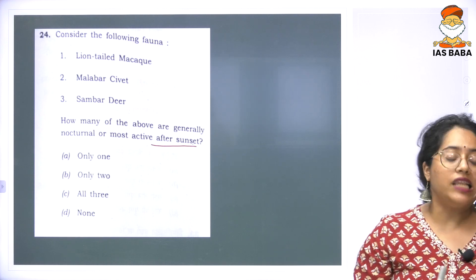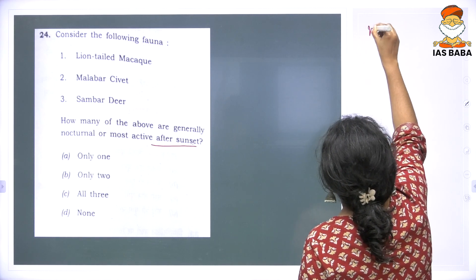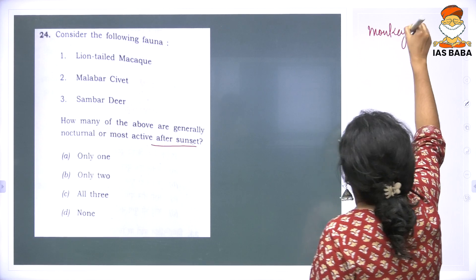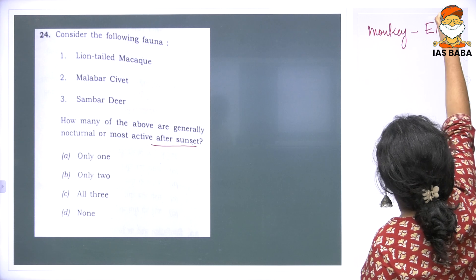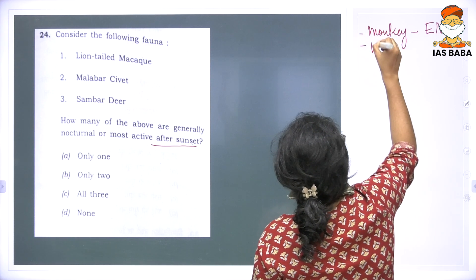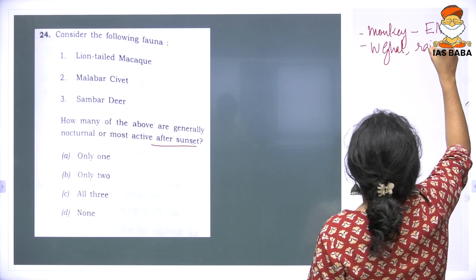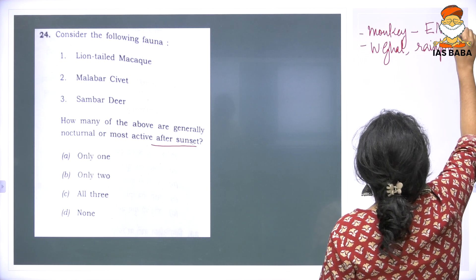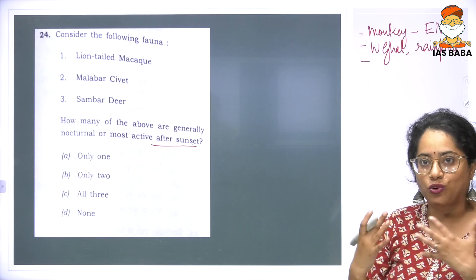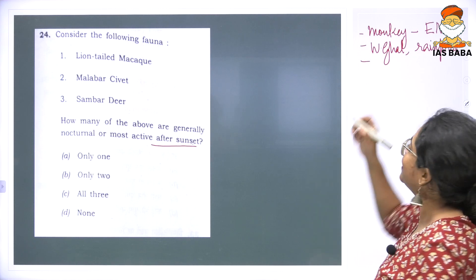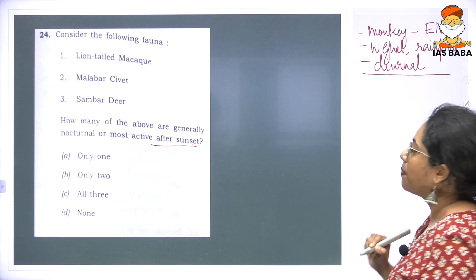Let us look at each species. First, the lion-tailed macaque is primarily a monkey species and has been listed as an endangered species. You primarily see it in the Western Ghats rainforest region. The lion-tailed macaque, like most other monkey species and very similar to humans, is a diurnal species — meaning they are active in the daytime.